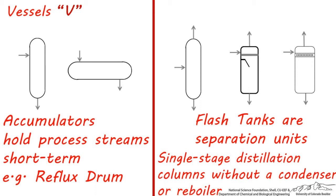You can always tell a separation unit from a simple tank vessel by the number of streams coming out of the unit. If there's one stream coming in and going out of the unit, you have an accumulator. If there's one stream going in and two or more streams coming out, then it's a separation unit.